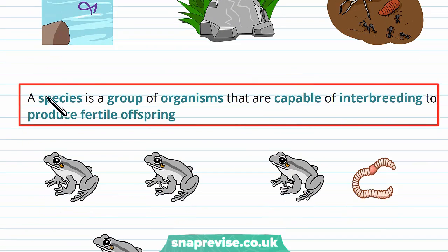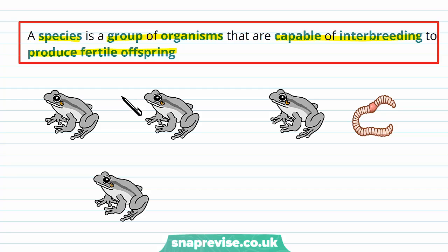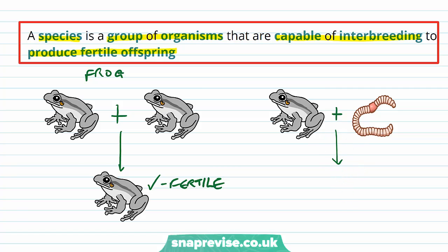So what do we mean by a species? A species is a group of organisms capable of interbreeding to produce fertile offspring. To illustrate this, if we take two frogs of the same species and they breed together, they will healthily produce a fertile organism of the same species. But if we take two organisms from different species, like a frog and a worm, and combine their genetic material, they would not produce fertile offspring, because the genetics just wouldn't work together.